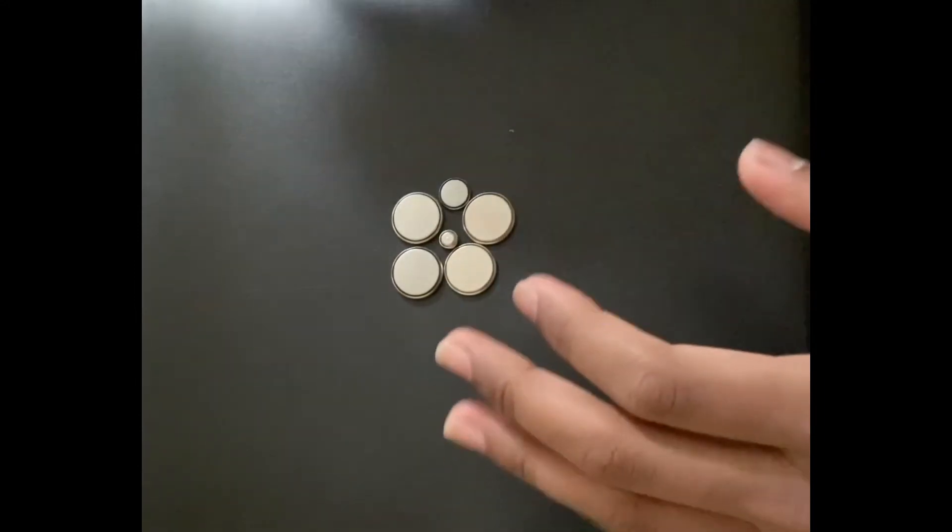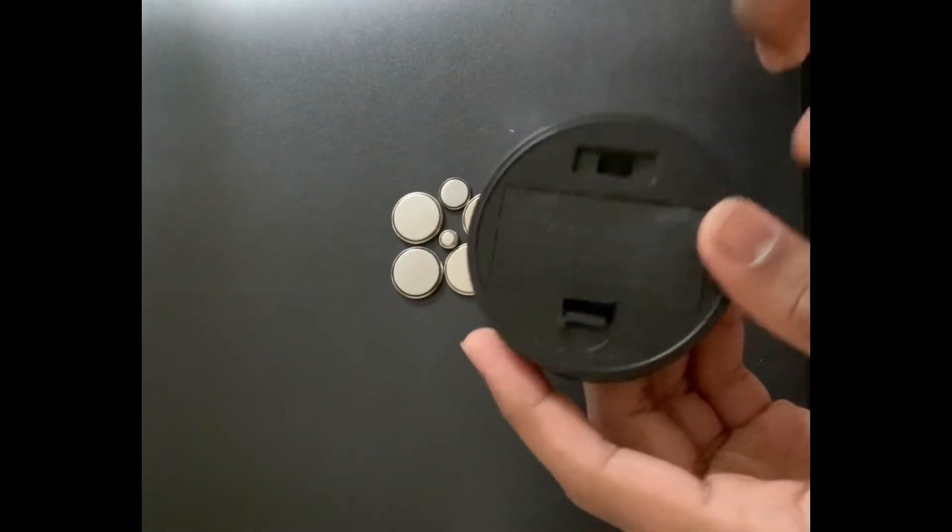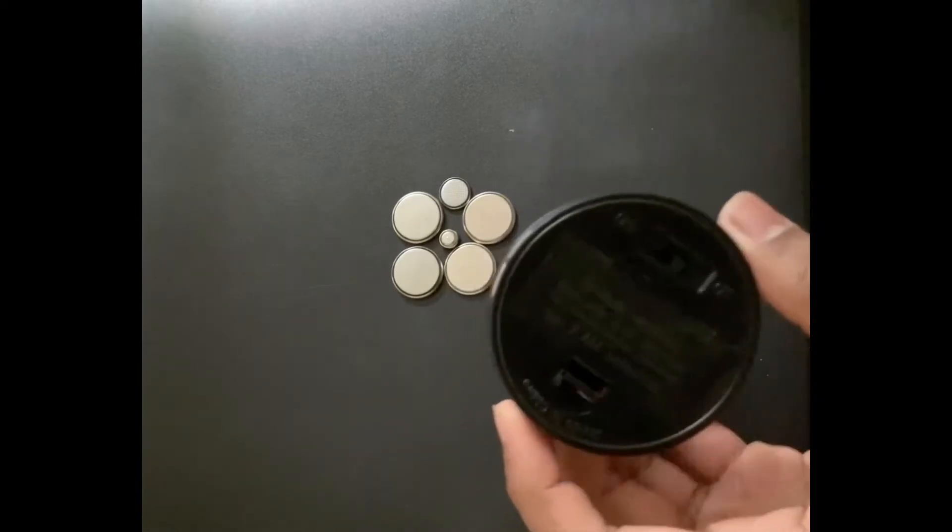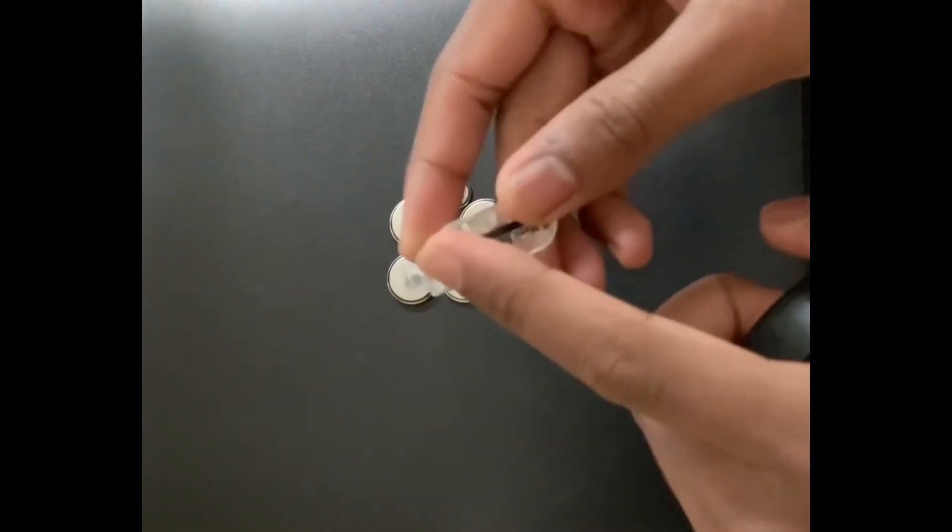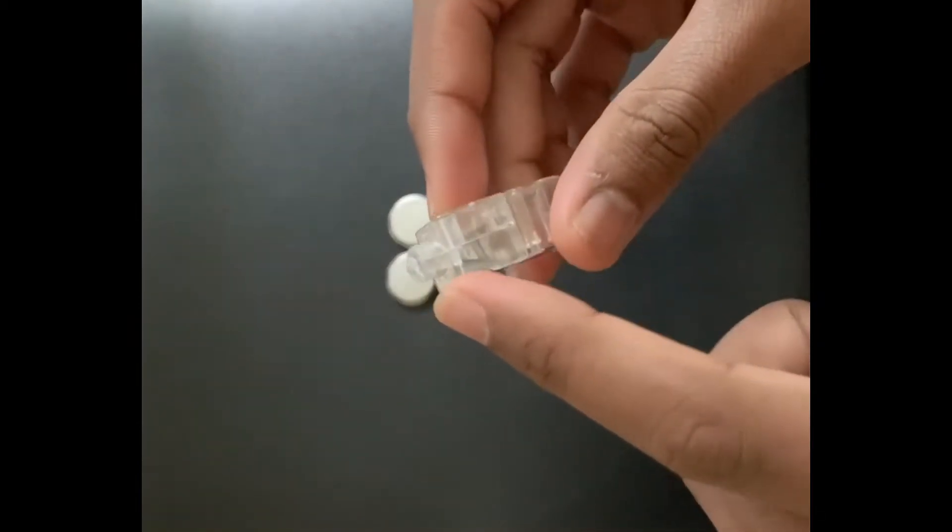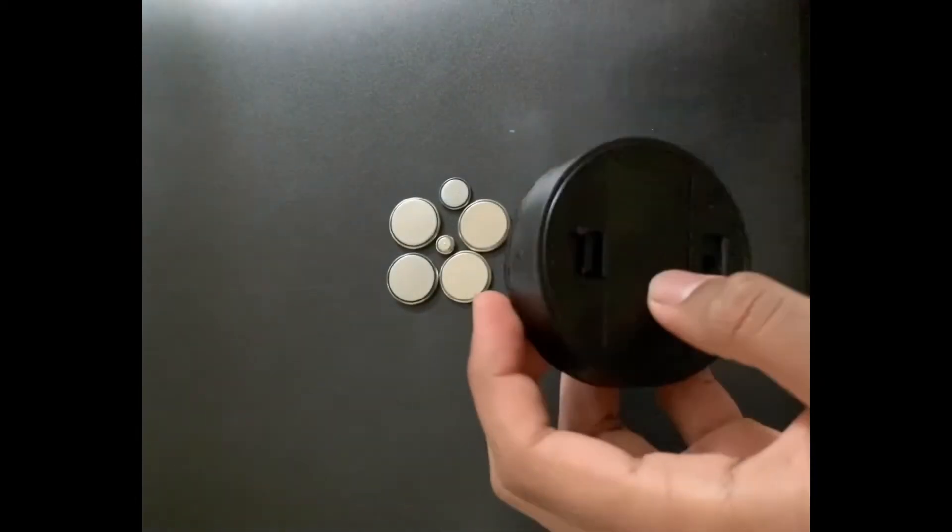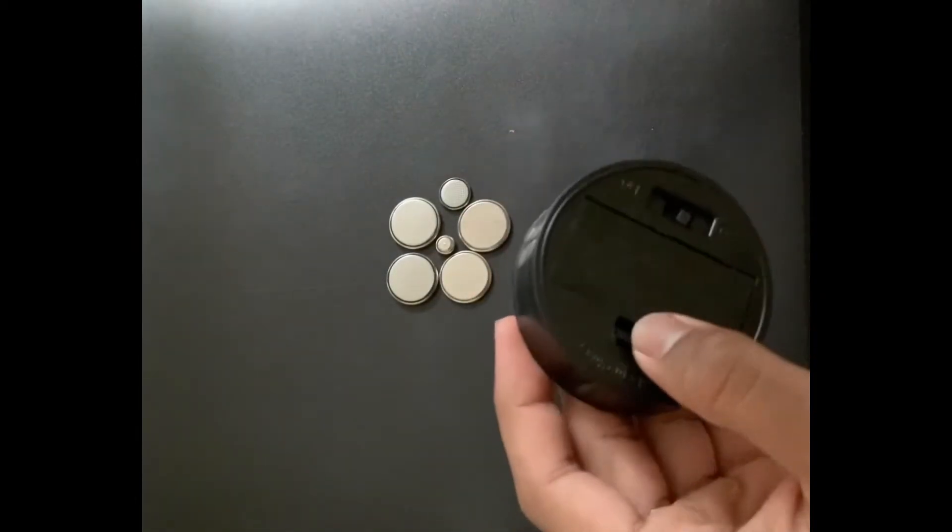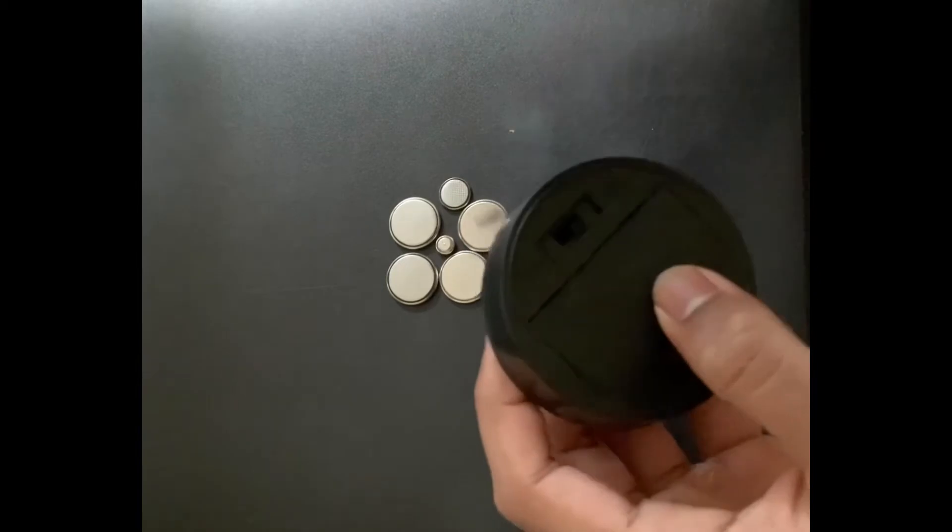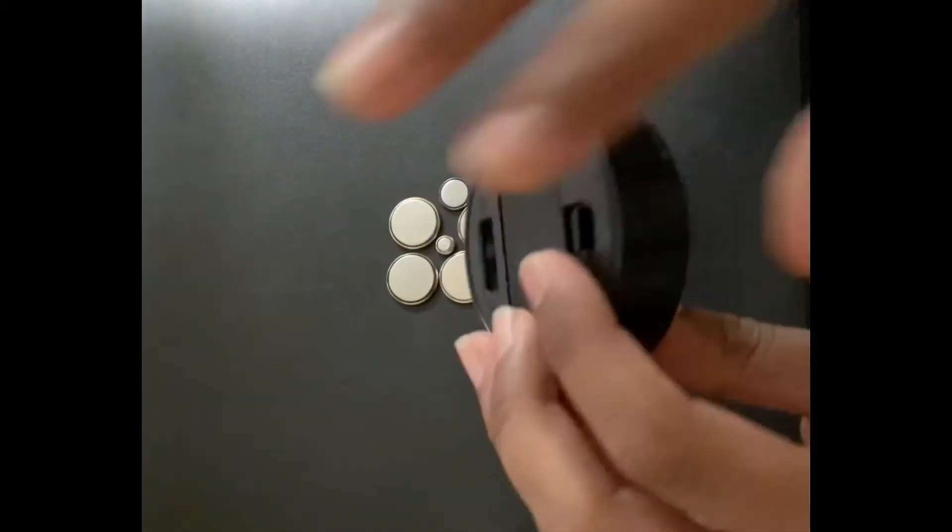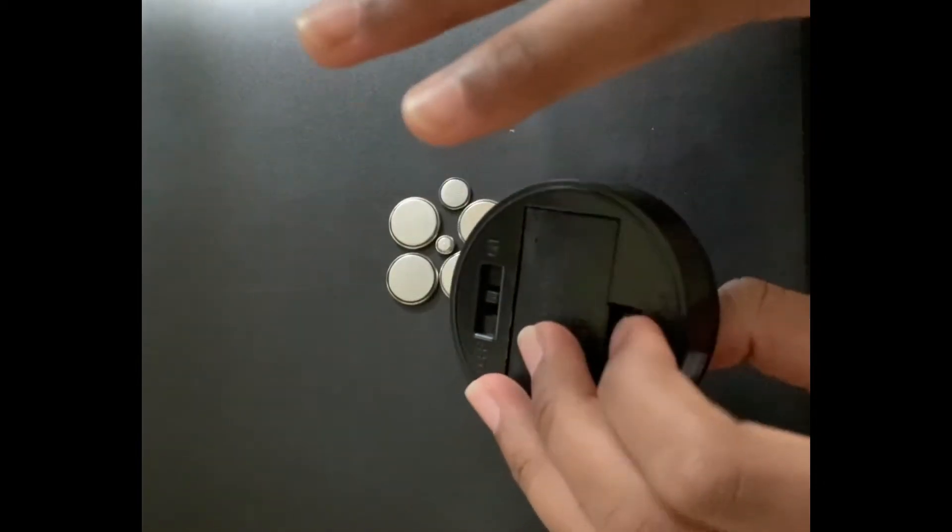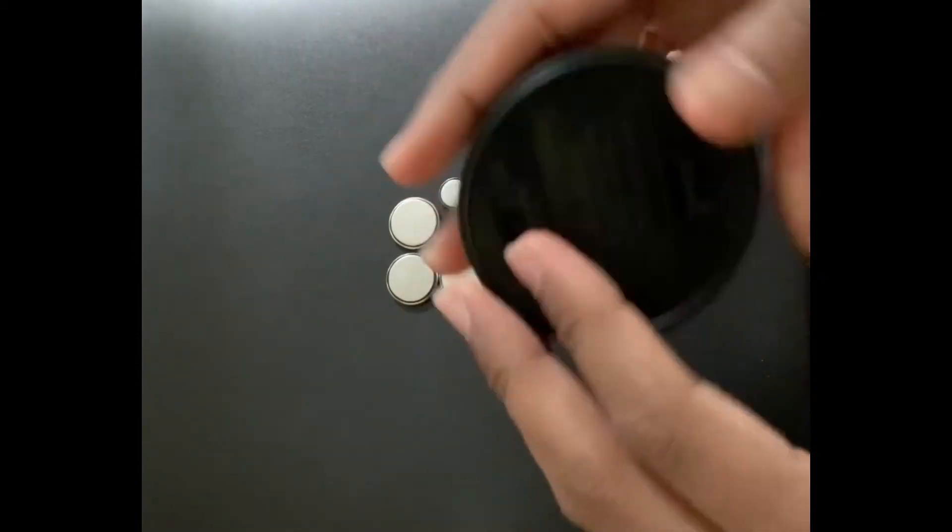So first, make sure that you have a device, some sort of device that has a light bulb, and I'm going to use this to demonstrate. But it can be anything. It can be your old TV remote or anything that has a bulb that used to work, but now you know for sure that it doesn't work. Okay, but you've got to be sure about that.